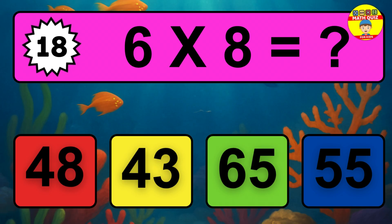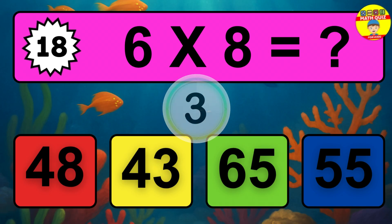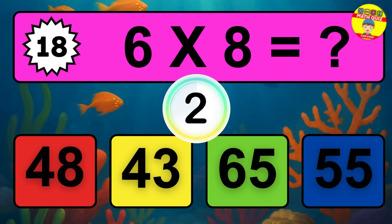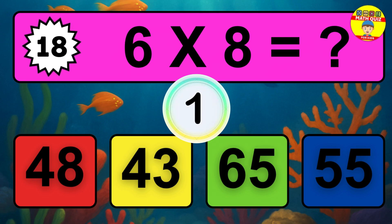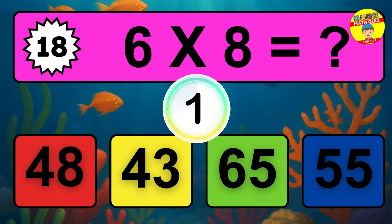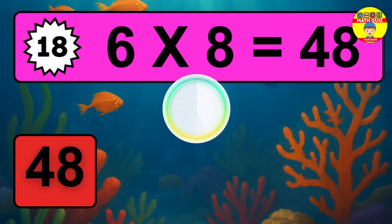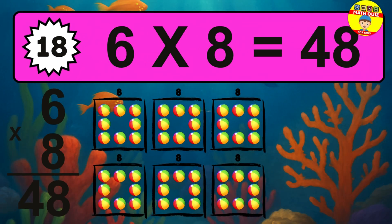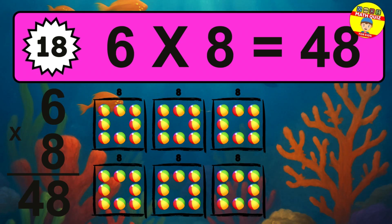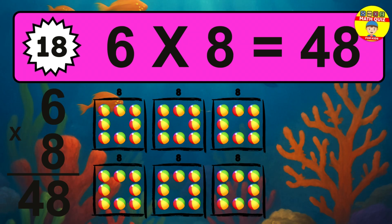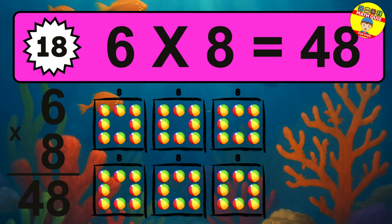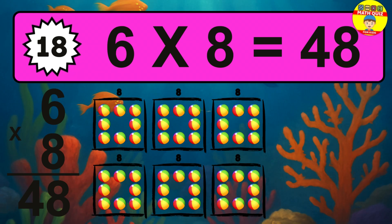Question 18. 6 times 8 equals what? The answer is 6 times 8 is 48. To calculate, we have 6 groups with 8 balls each one. So, how many balls do we have? 48 balls.